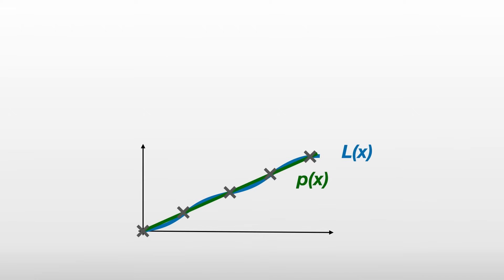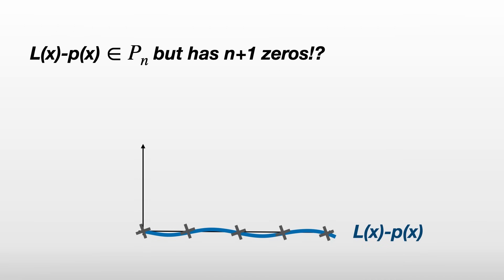Now let's subtract p from L. Since they're equal at the nodes, we now have a polynomial that's of order n but has n+1 zeros. Using our key fact, this must mean that L(x) - p(x) is equal to zero, or L(x) was equal to p(x) all along.